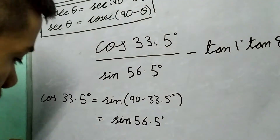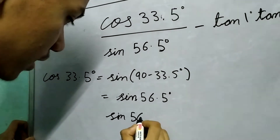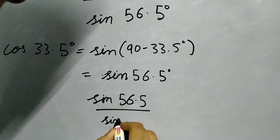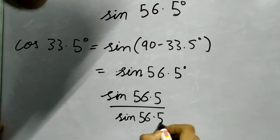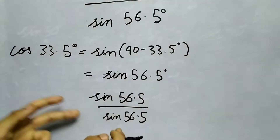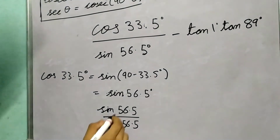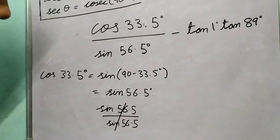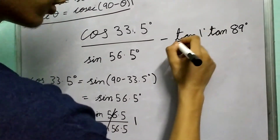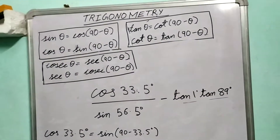Now we substitute — we can write cos 33.5 degrees as sin of 56.5 degrees, so this becomes sin 56.5 upon sin 56.5 and this cancels out and we are left with 1. So this first part is easy. Now how do we go about doing this part — tan 1 degree into tan 89 degrees?